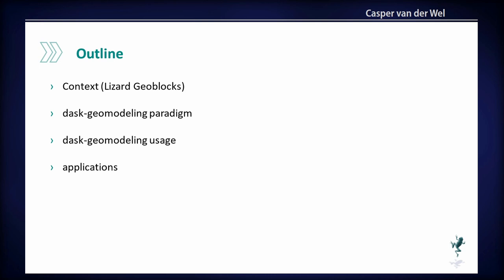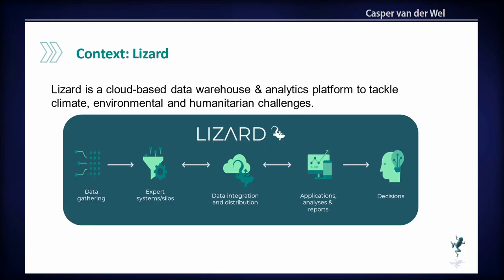I will start with some context, because the use case is pretty important for this library. In the context here is Lizard, which is a data platform. It can ingest different types of GIS data, integrates it, and you can view it in a website. You can build dashboarding on it and make decisions based on that dashboard. Lizard sits right in the middle.